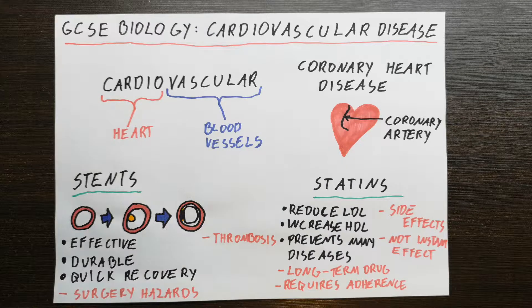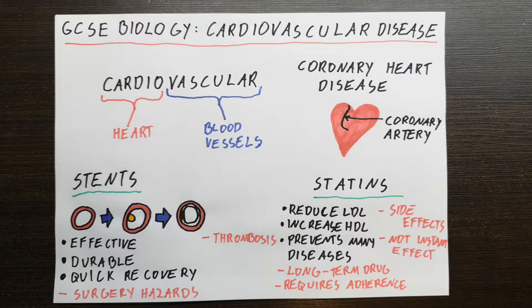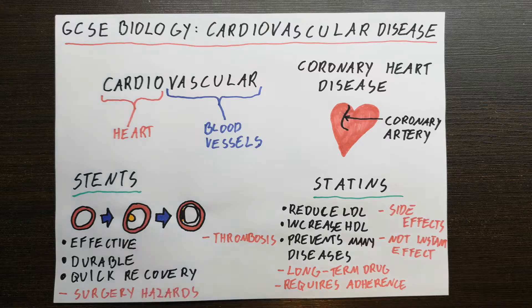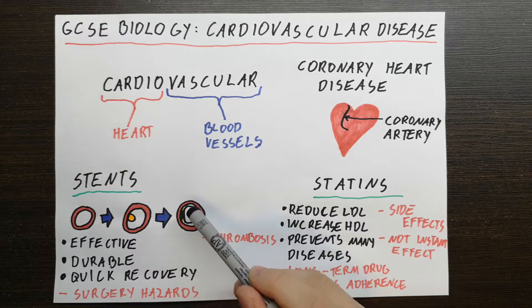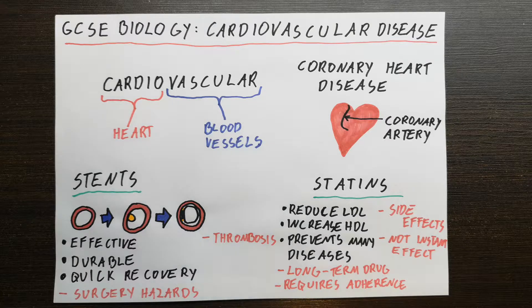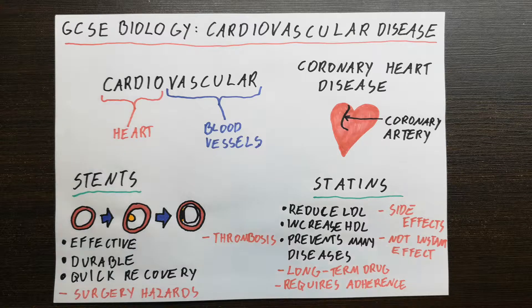What are stents? A stent is like a circular tube that you insert into the coronary artery to keep it open. Here we have a normal healthy coronary artery, and that yellow bump is fat deposits that start growing and blocking the coronary artery. What we can do is insert a stent — a tube that goes inside the coronary artery — that pushes the fat blockage into the artery wall, whilst keeping the lumen of the artery open and allowing blood to pass freely.